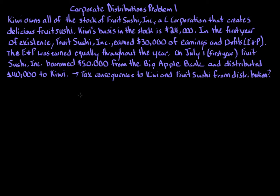Whenever we're dealing with a distribution, we should always start by looking at whether it's a property distribution or a stock distribution. Looking at Code Section 317, it defines property as money, securities, and any other property except for stock in the corporation. So a property distribution consists of cash, money, securities, and other property other than stock in the actual corporation — here, Fruit Sushi Inc. Kiwi is receiving a distribution of $40,000 cash, so this is considered a normal property or cash distribution.